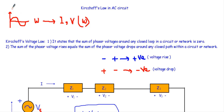Therefore, if I use a sinusoidal voltage source in the AC circuit, we will get sinusoidal voltages and sinusoidal currents. And I have shown you that if we have any sinusoidal voltages and sinusoidal currents, we can easily convert them into phasor form.